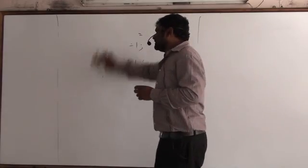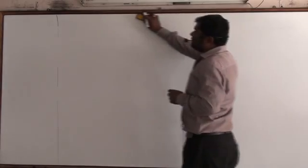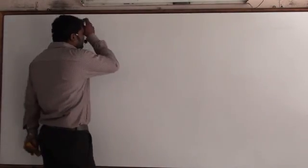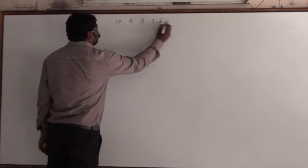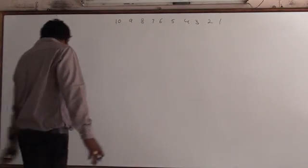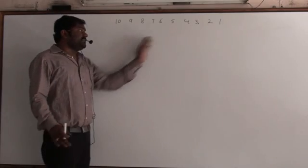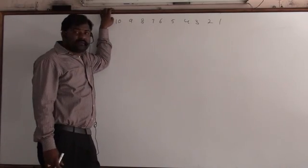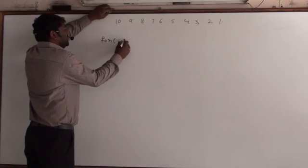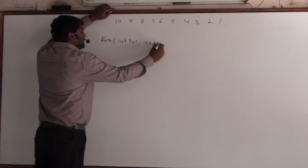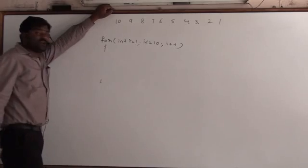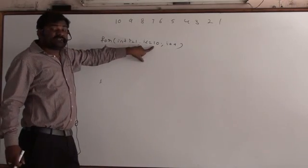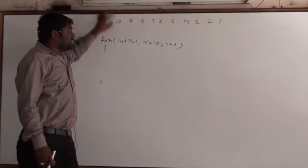So what I want to tell you is: why we are writing the initial value and condition is based on how many times I want to run the loop. Let us see one more example: I want to print 10, 9, 8, 7, 6, 5, 4, 3, 2, 1. You can do this in two ways. I want to write the loop for 10 times, so: for(int i = 1; i <= 10; i++). Without any doubt you can write this, because I want to write the loop for 10 times — that is why I have written 1 and 10.